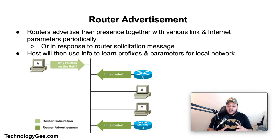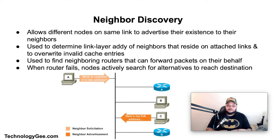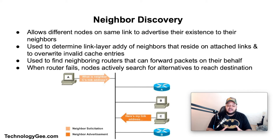Routers advertise their presence together with various link and internet parameters, either periodically or in response to a router solicitation message. A host uses this information to learn the prefixes and parameters for the local network. Neighbor Discovery is a protocol that allows nodes on the same link to advertise their existence and learn about neighboring nodes. Routers and hosts use neighbor discovery messages to determine link-layer addresses of neighbors, find neighboring routers that can forward packets, and actively track reachability — searching for alternatives when a router or path fails.